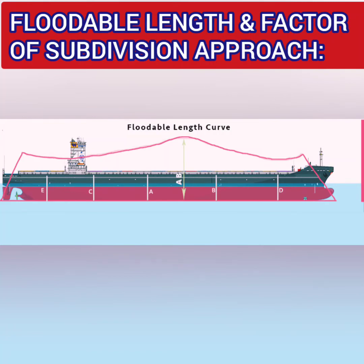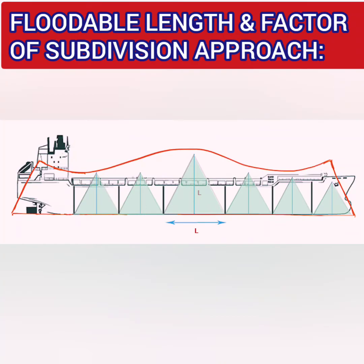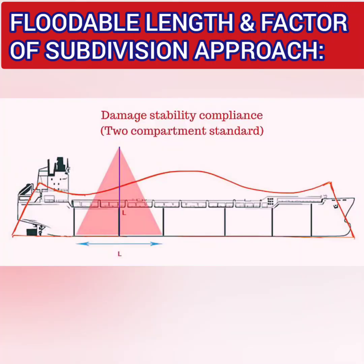Of course, theoretically you can keep adding subdivisions and make the vessel unsinkable, but that increases cost and reduces cargo carrying capacity, so practically it won't work. Ship designers find a sweet spot through immense calculations. To check damage stability compliance, there is a floodable length curve method. A curve representing the floodable length is superimposed on the ship's plan, and compartment by compartment the compliance is checked. The length of the assumed damaged compartment is plotted vertically at its center — if it's below the floodable length curve, the compartment complies with the one compartment standard.